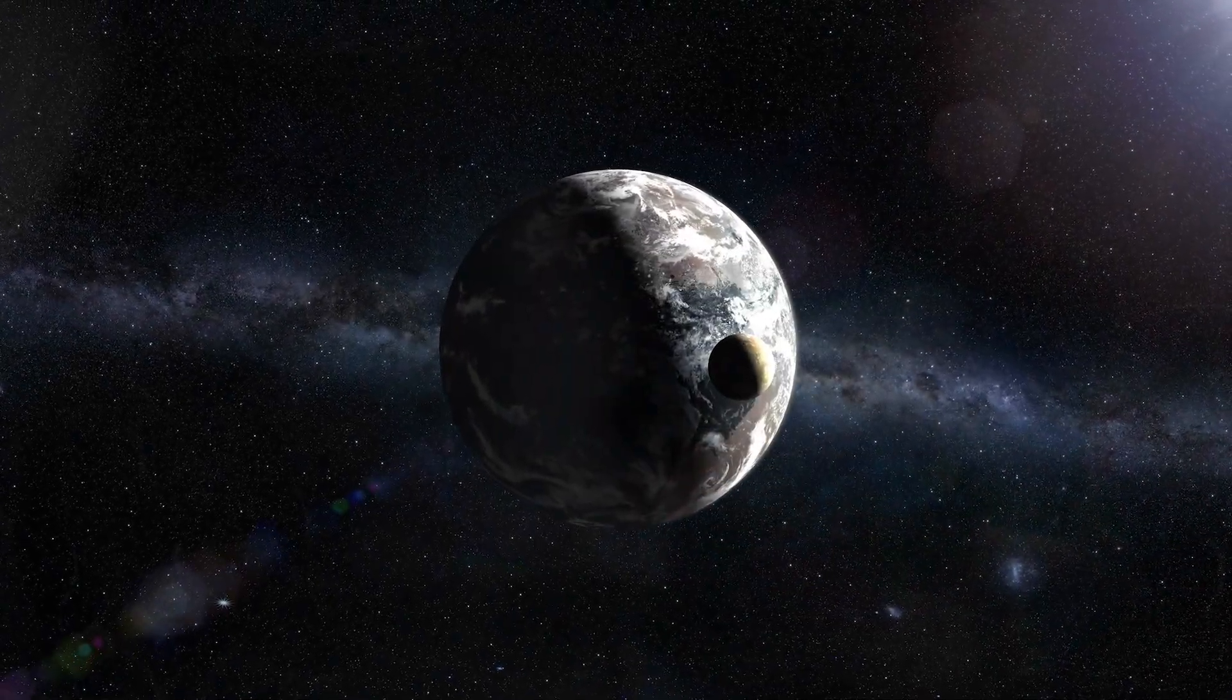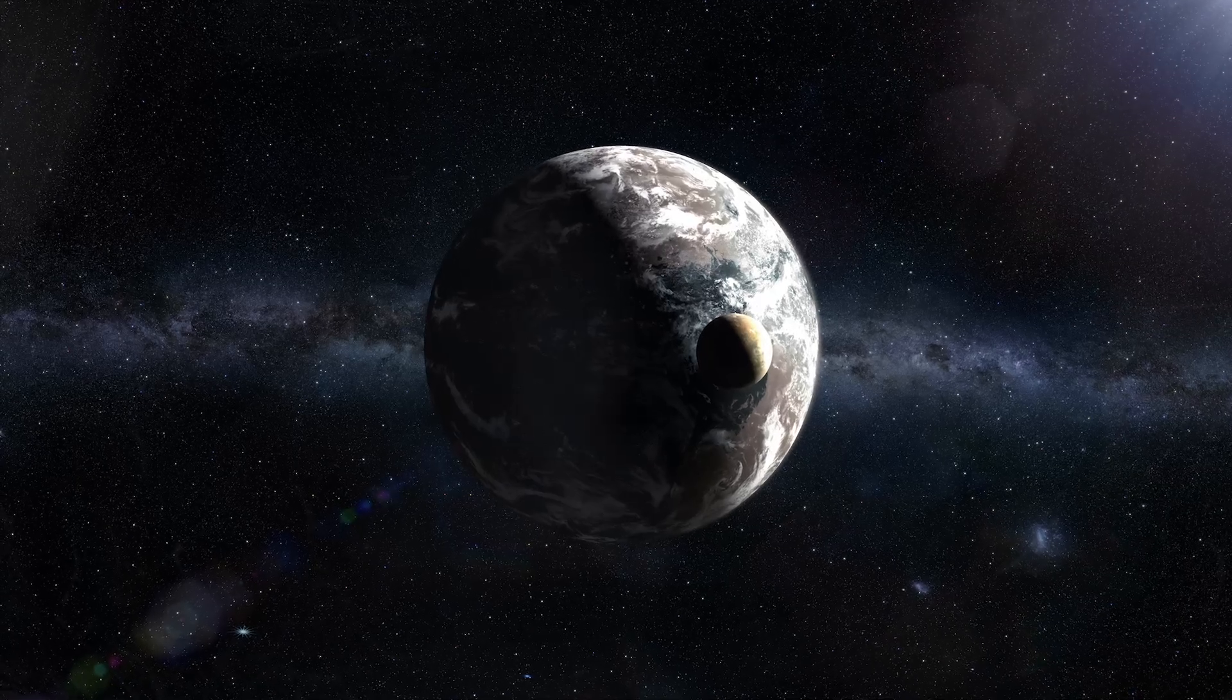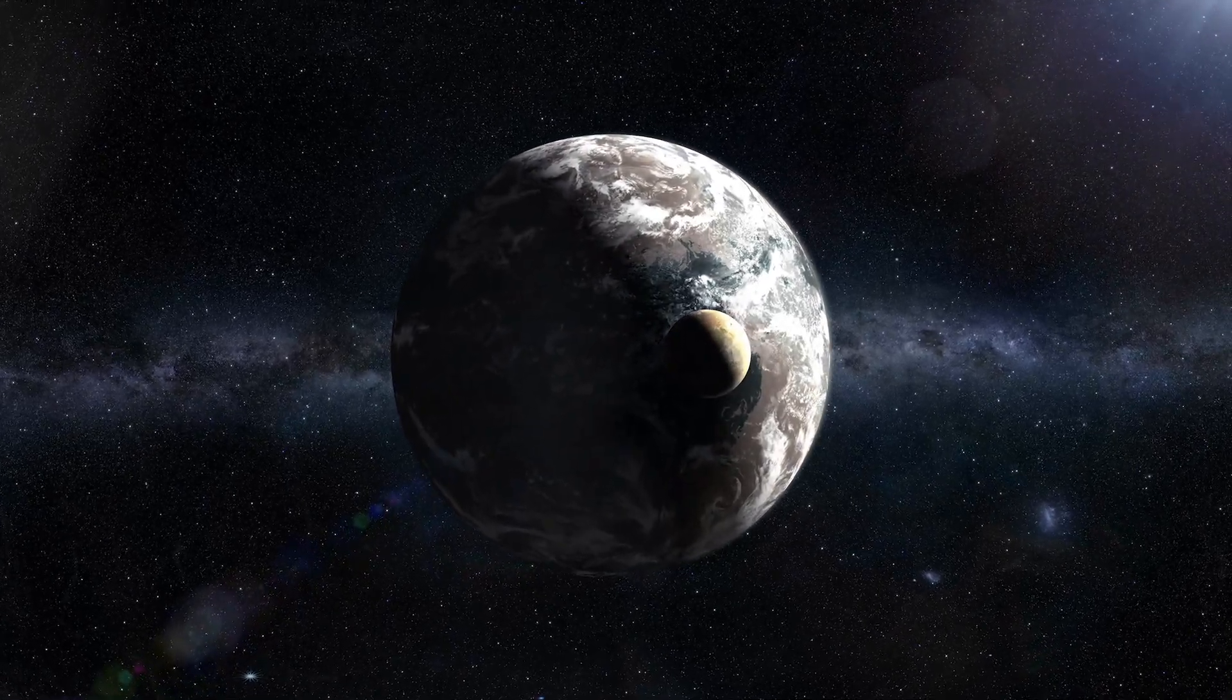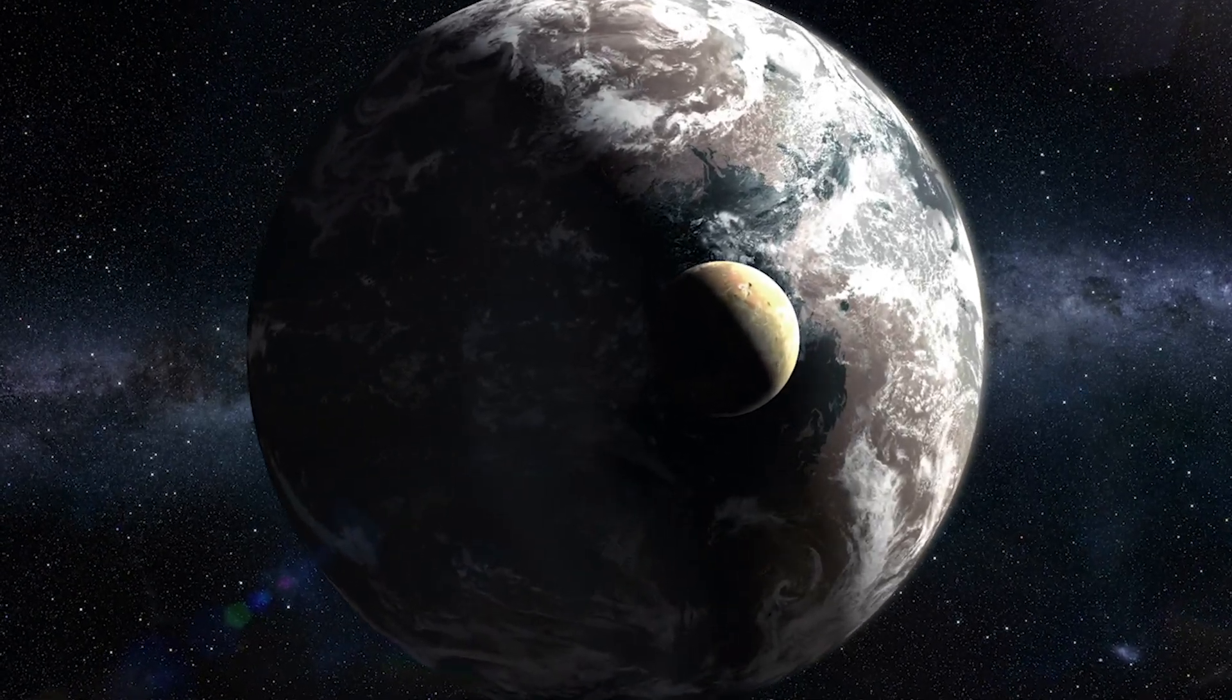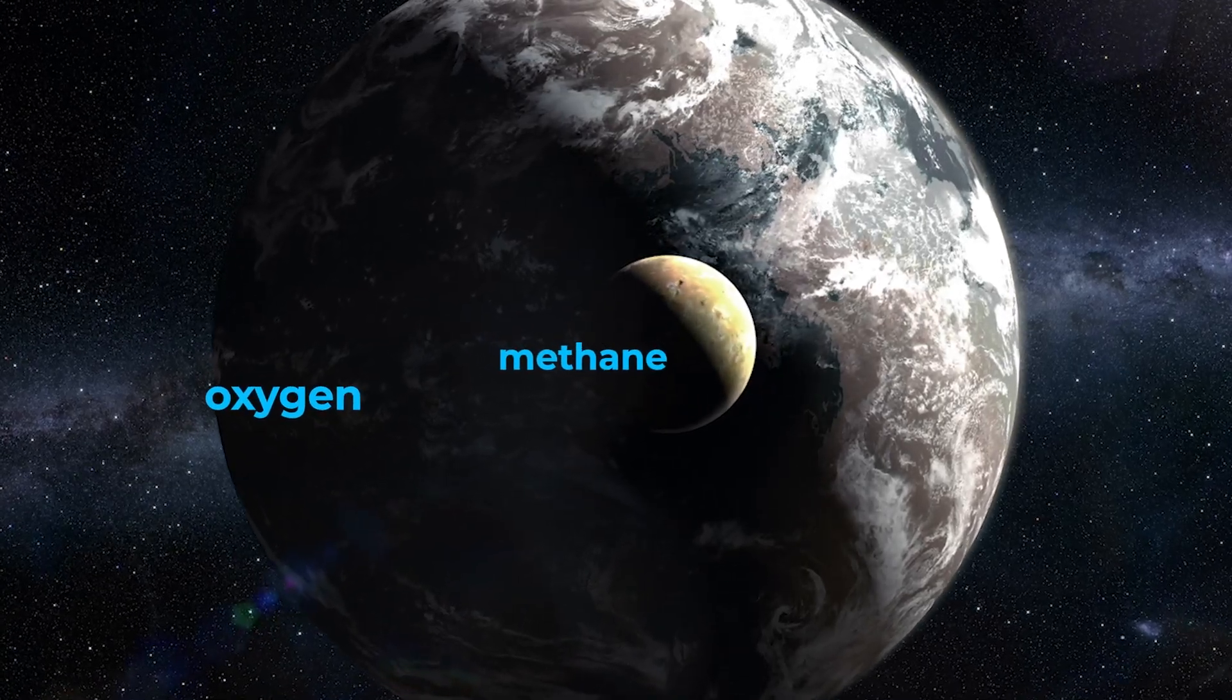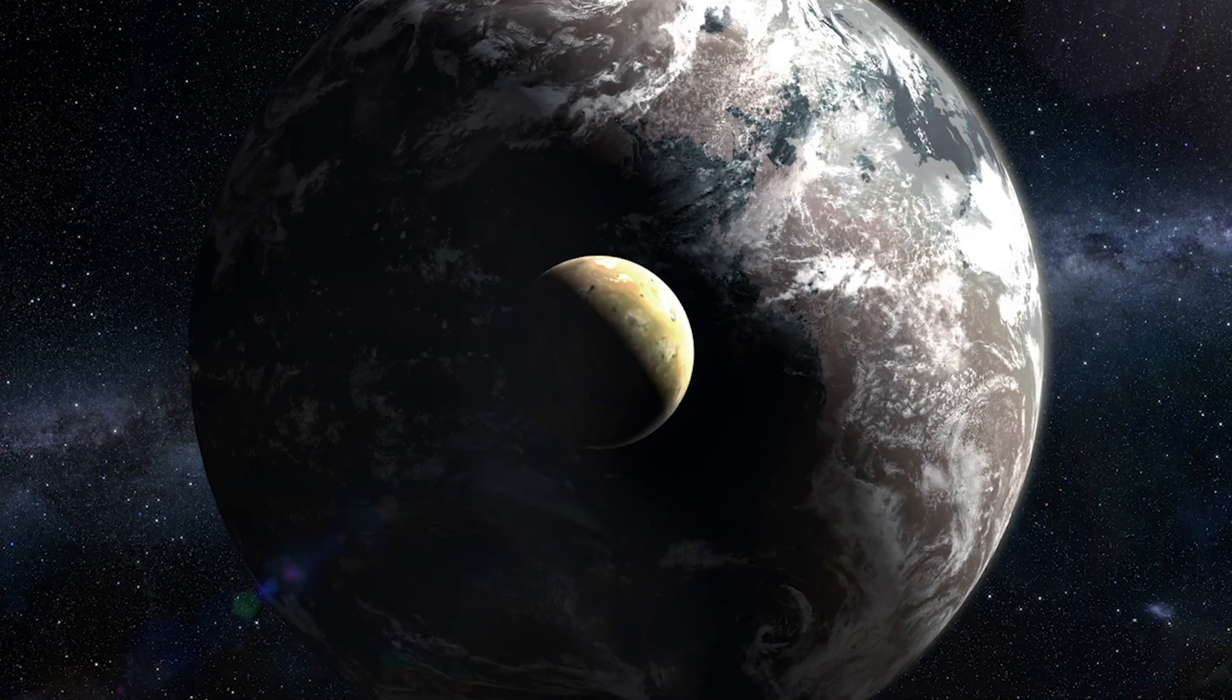But finding life across the cosmos isn't as simple as just pointing a telescope at a planet. We need to know exactly what to look for. Here's where it gets fascinating. Life, at least as we know it, leaves very specific fingerprints, like oxygen and methane. And when you find both of these together, that's when things get really interesting.